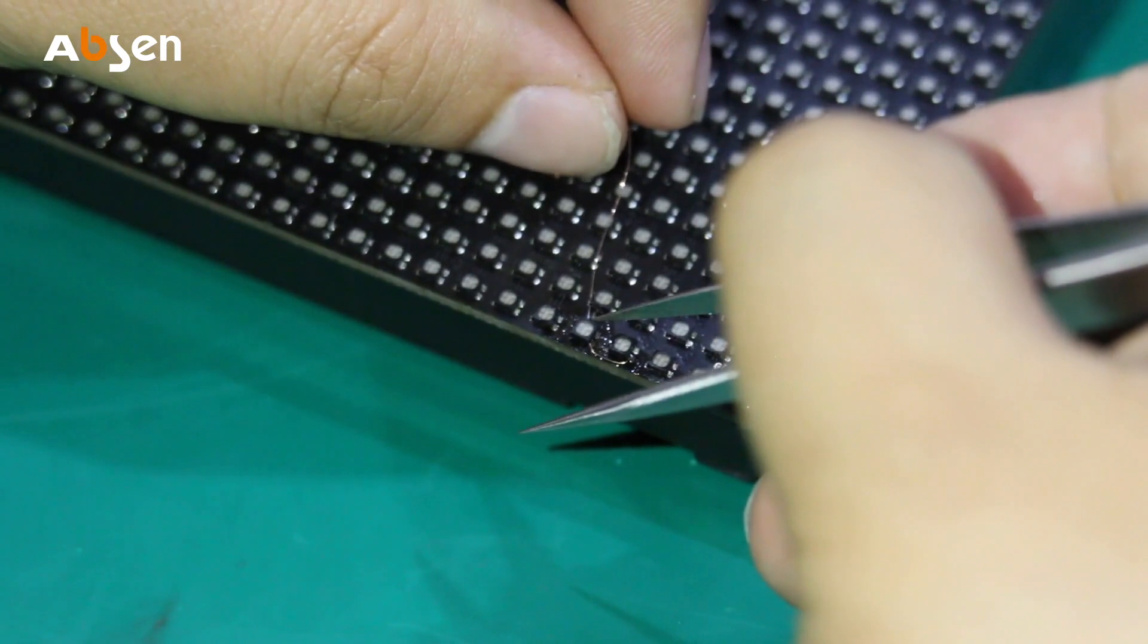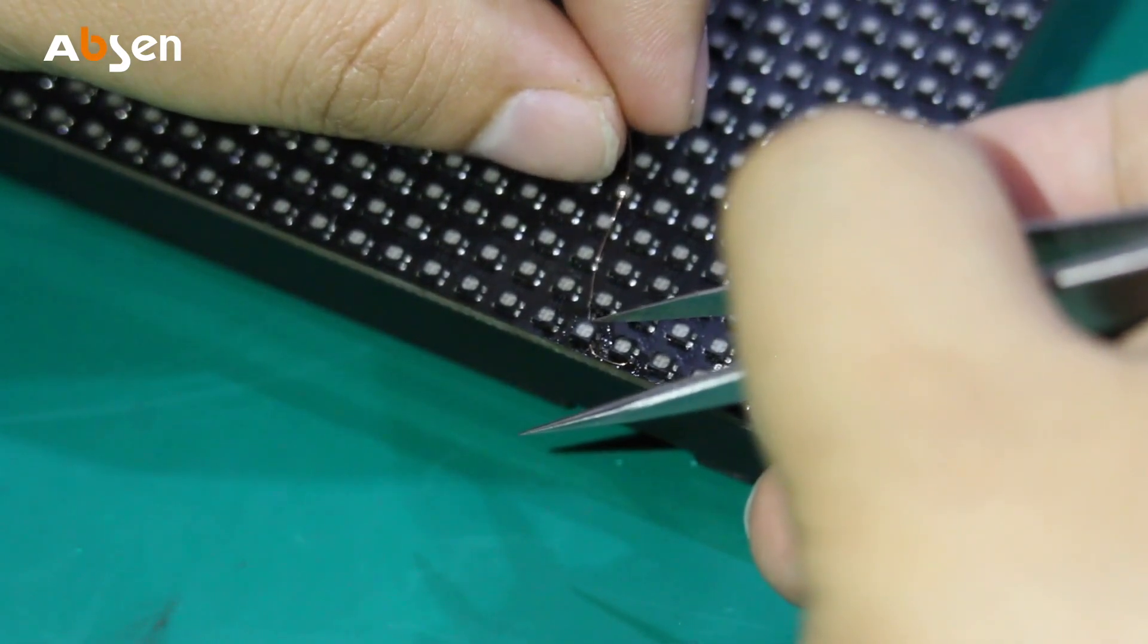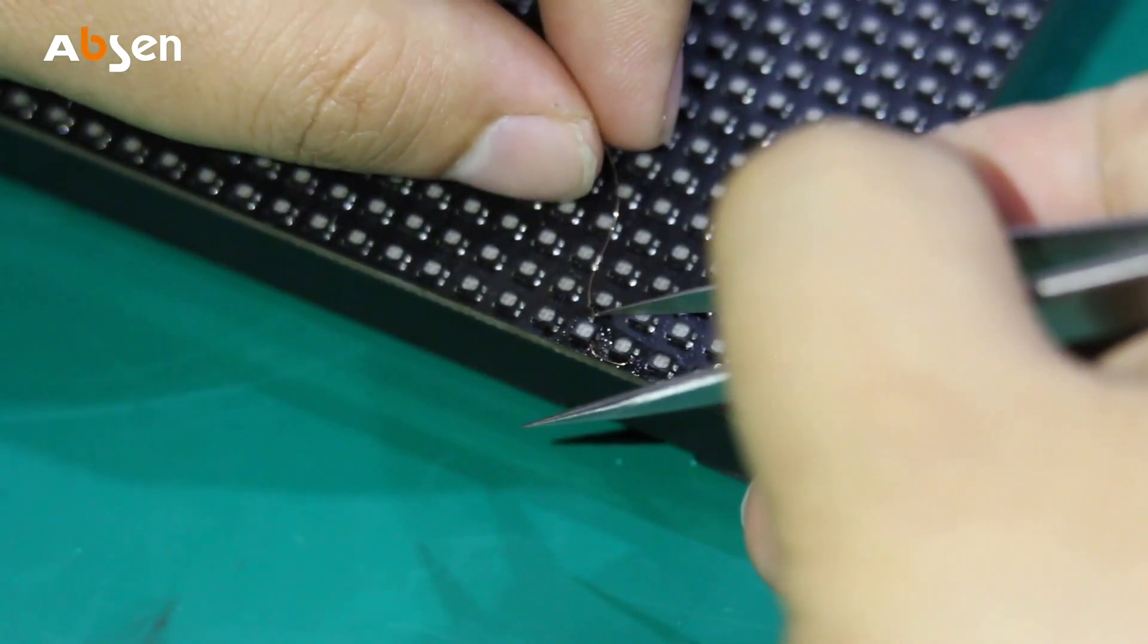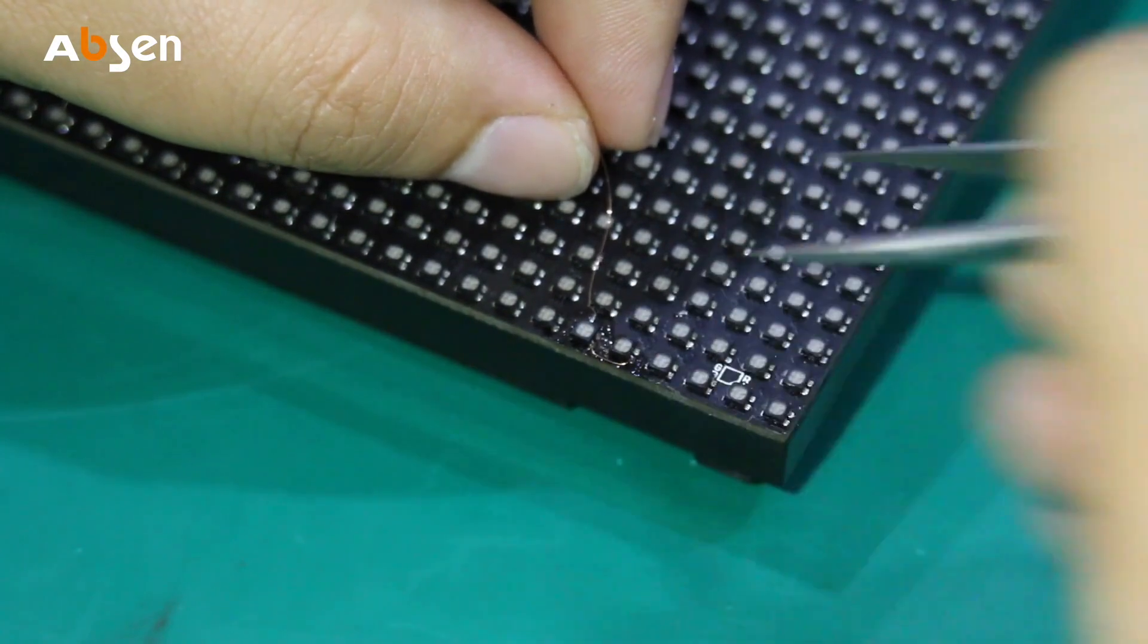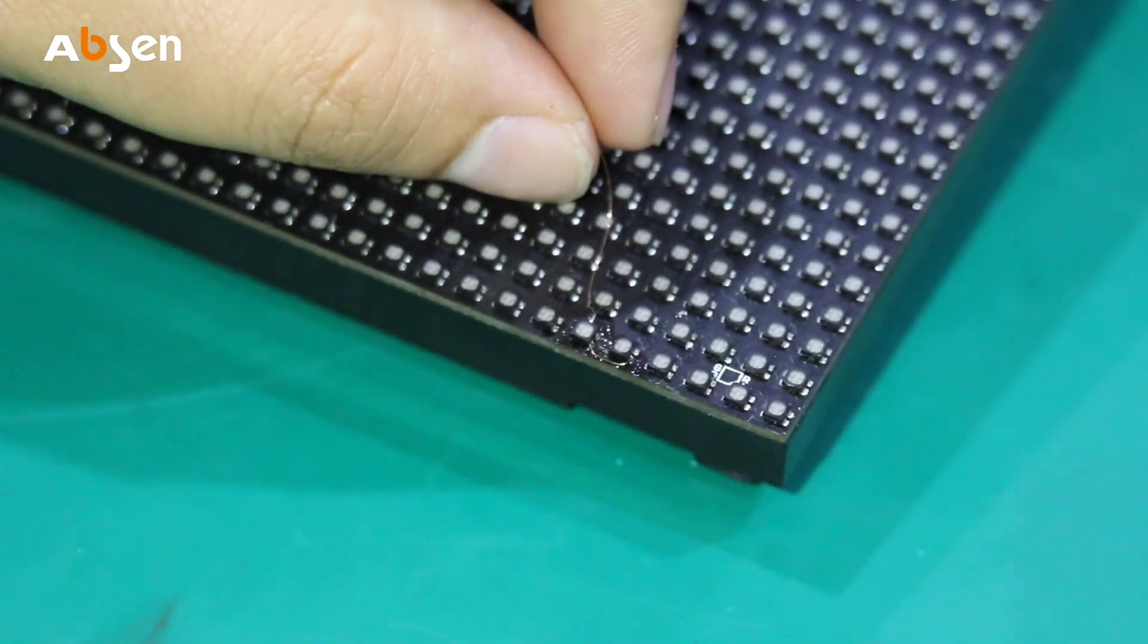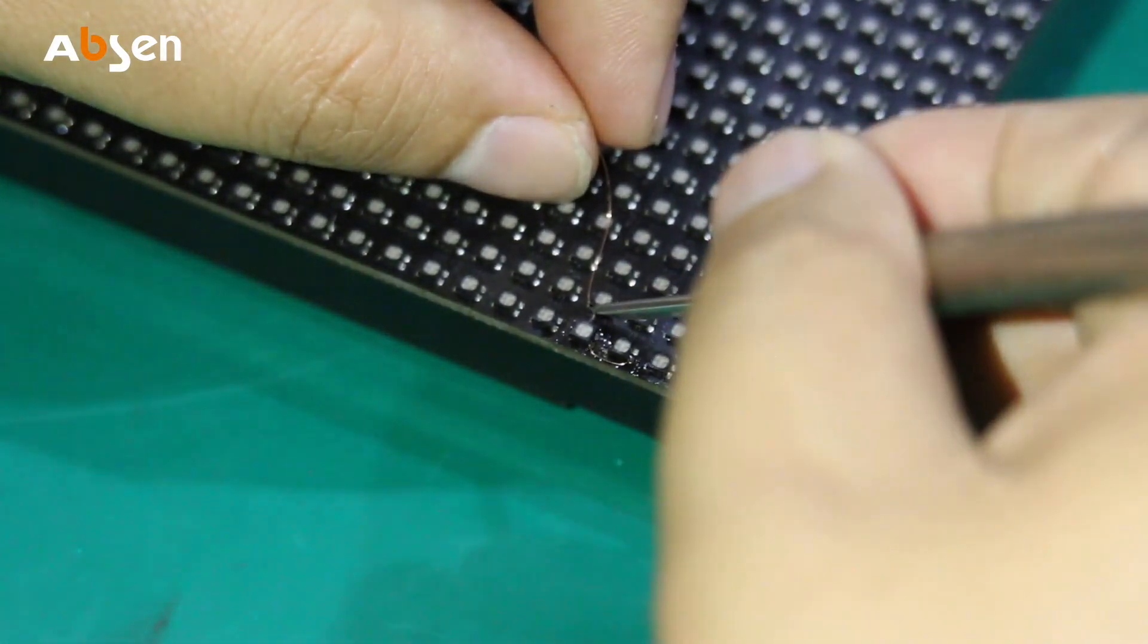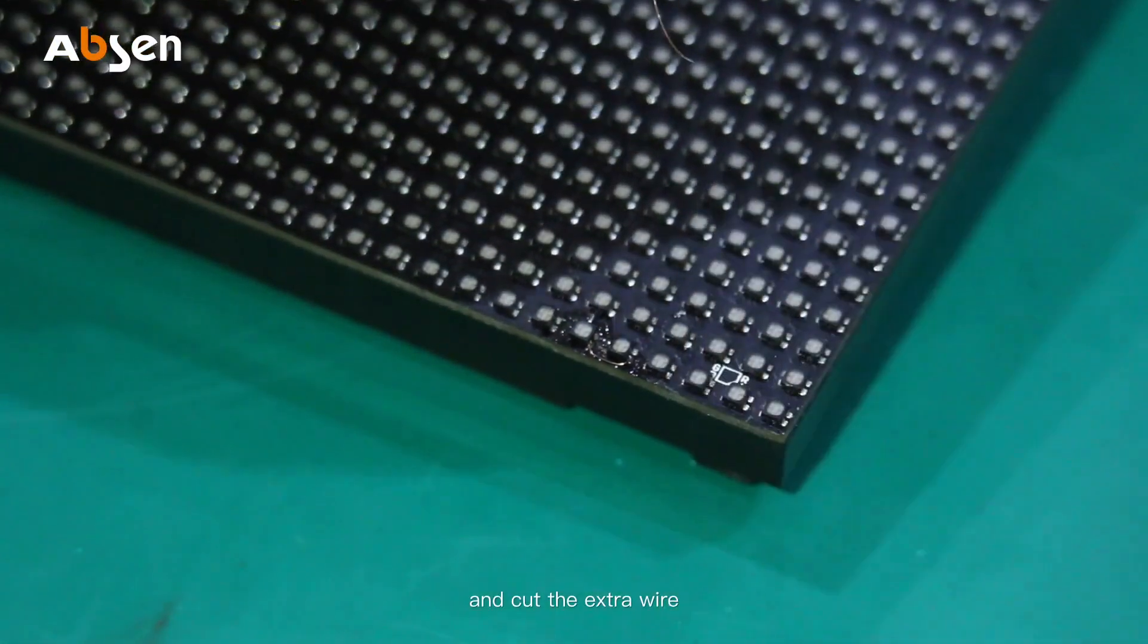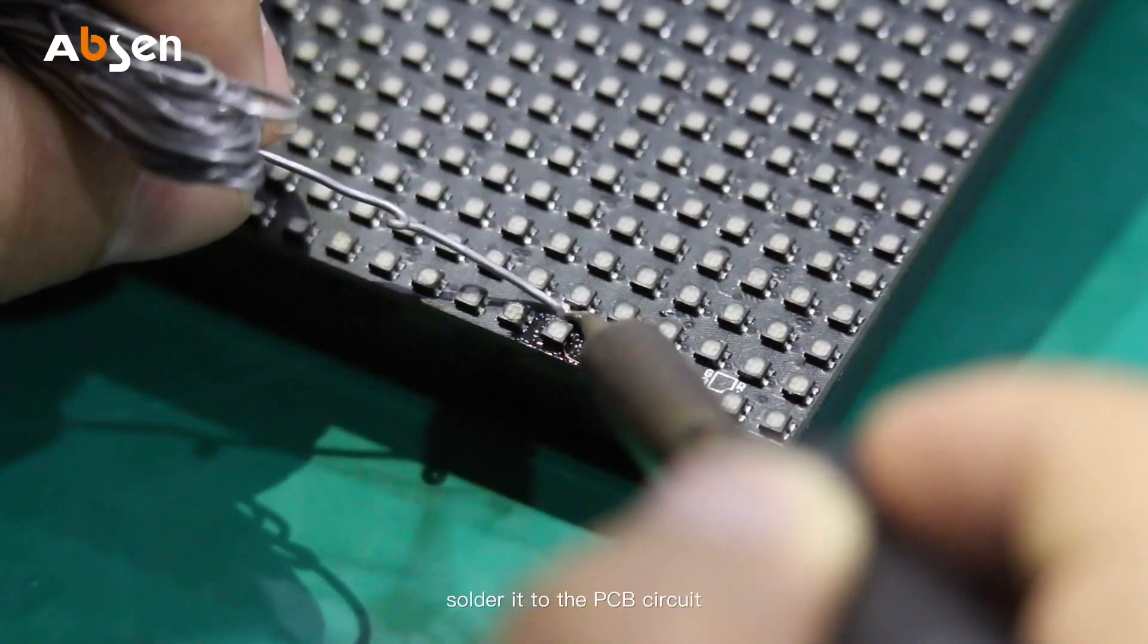Follow this line and cut the extra wire. Solder to the PCB circuit.